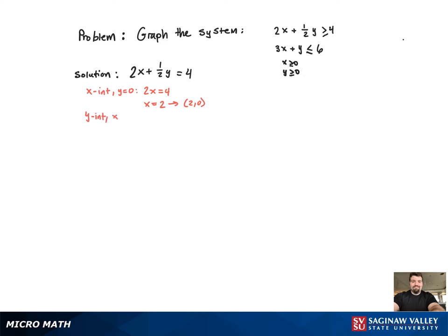Now for the y intercept. Plugging in 0 for x, we get 1/2 y equals 4. Multiply both sides by 2 gives us y equals 8, which corresponds to the point (0, 8).